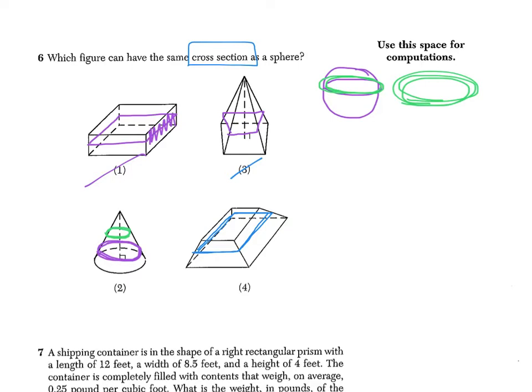So here again, in the rectangular prism in choice 1, the base was a rectangle, so the cross-section is a rectangle. In number 2, a cone, the base is a circle, so my cross-section is a circle. No matter where you cut it, you end up with the shape of the base. So choice 2 is our answer for number 6.